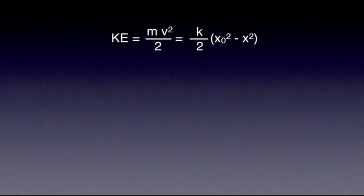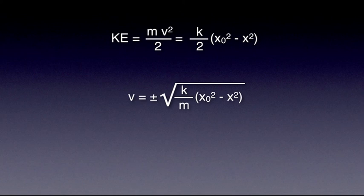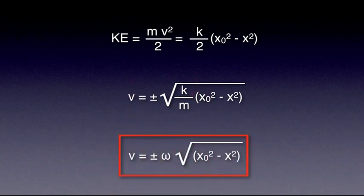A minute ago, we derived the following expression for kinetic energy. As kinetic energy is also mv squared over 2, we can extract from here a very useful formula that connects the velocity v and displacement x. v equals plus minus omega square root of x0 squared minus x squared.